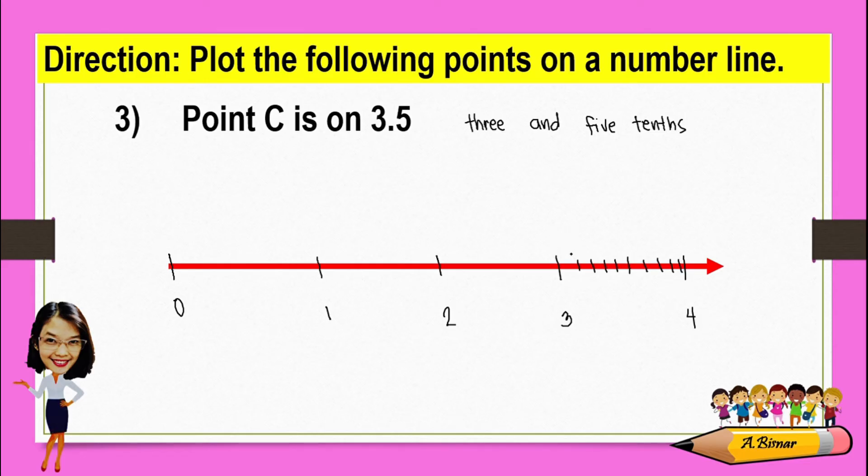From here, this will be 3.1, 3.2, 3.3, 3.4, 3.5, 3.6, 3.7, 3.8, 3.9, and then 4.